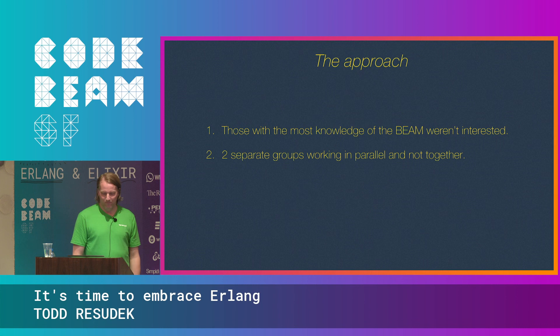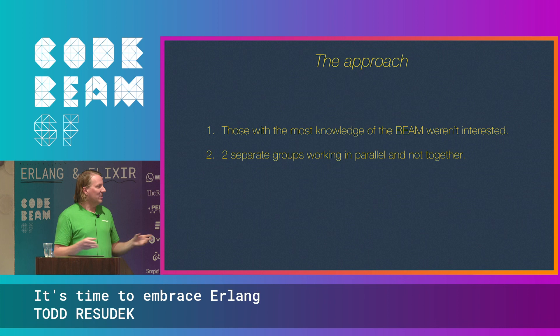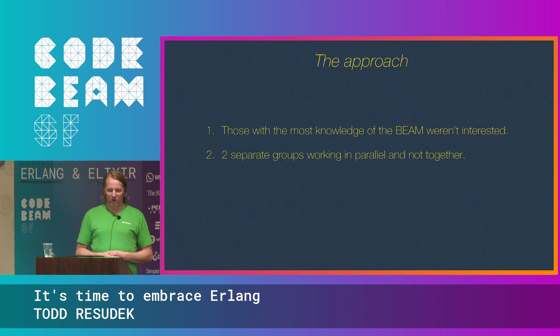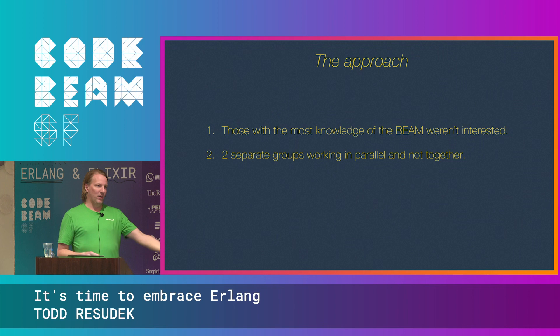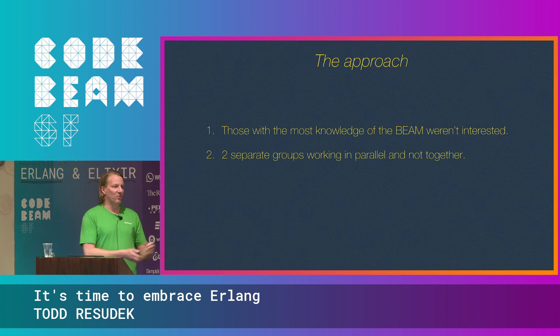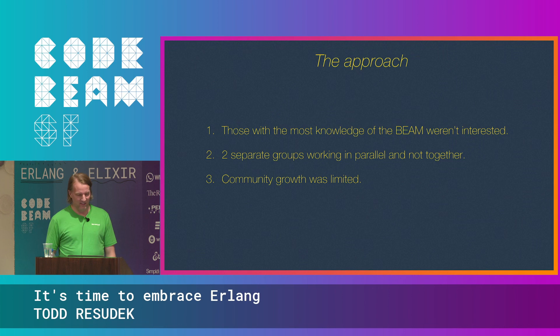The result is that the people with the most knowledge of BEAM just aren't interested. People who have worked in BEAM for five, ten, fifteen years — you're coming at them saying I've got this great BEAM technology that fixes the syntax that Robert, Joe, Mike, whoever created. They're like, I'm the person who knows everything about BEAM and I have no interest in Elixir because you're telling me my project isn't great. You end up with these two parallel groups — Elixir and OTP — working on all the same problems, with a lot of wasted effort.